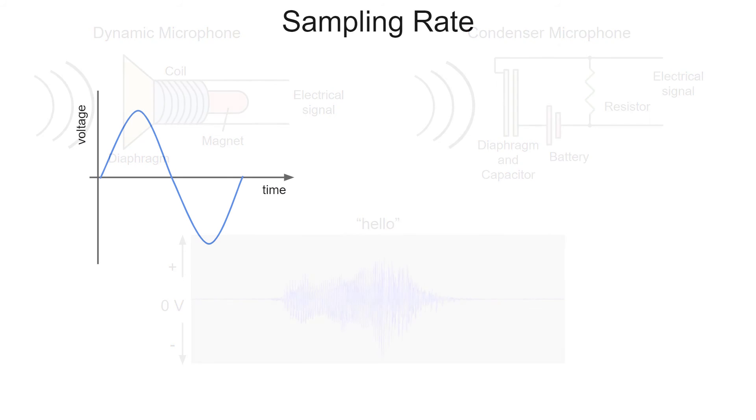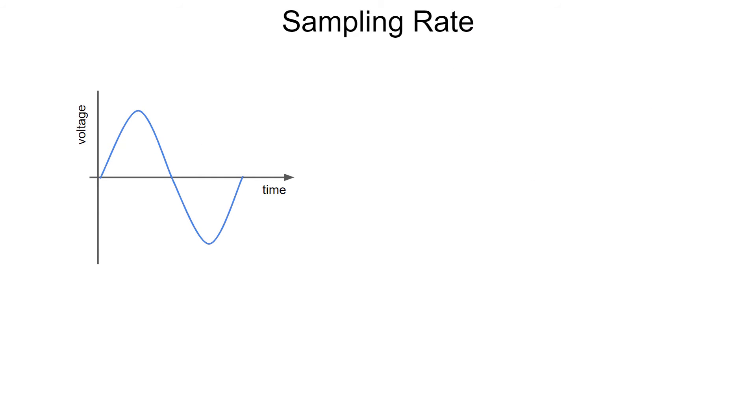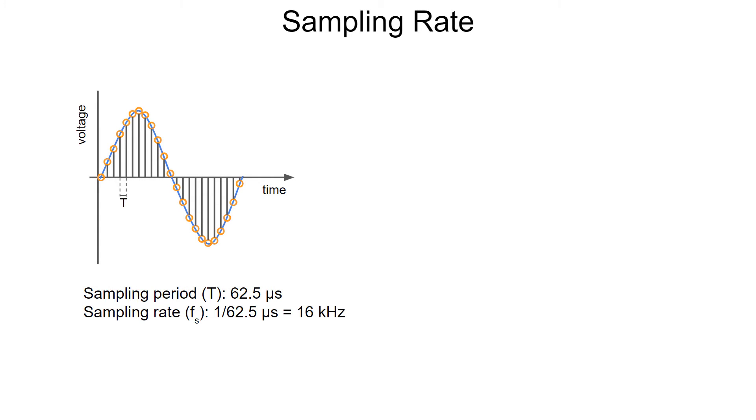Let's say we zoom in on a piece of that waveform. We have our microcontroller sample the voltage every 62.5 microseconds. We take the reciprocal of the sampling period to get the sampling rate, which is 16 kilohertz.